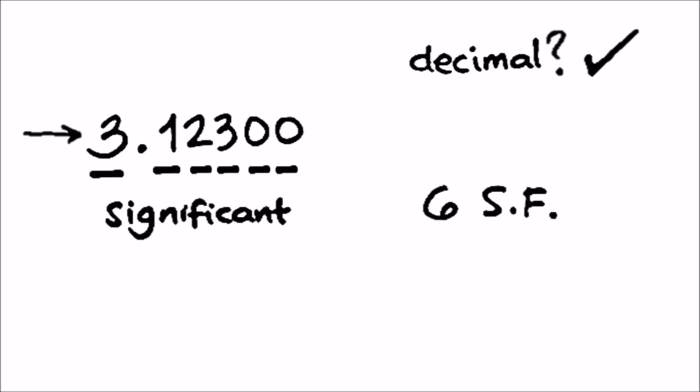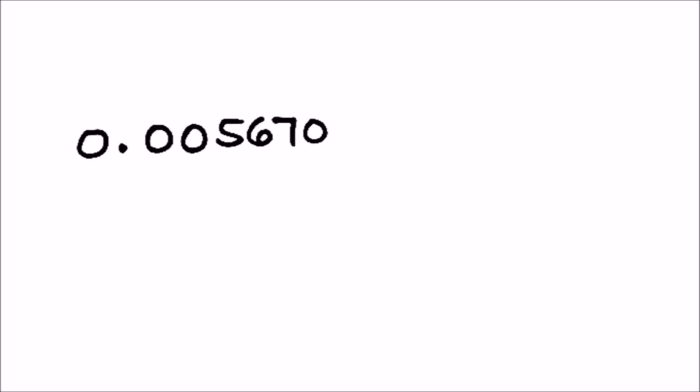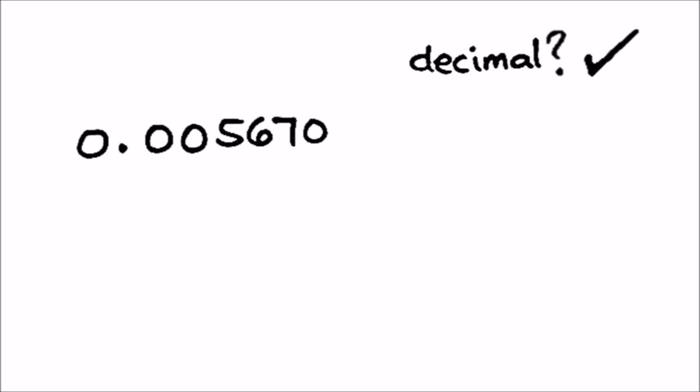Next example: 0.005670. How many significant figures are there? Is there a decimal point in there? There is! So we start from the left and move to the right until we hit the first non-zero digit number.